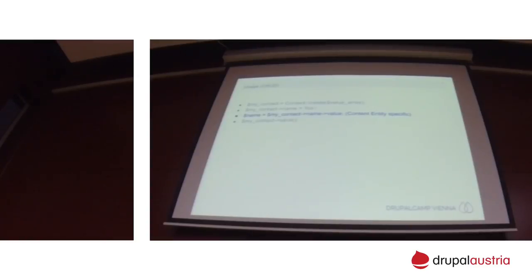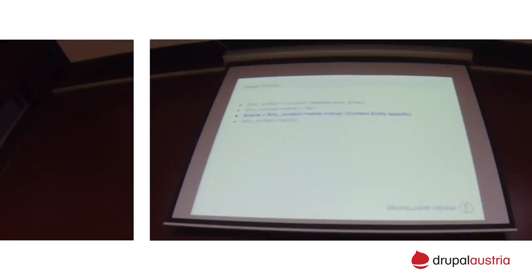With this, you would put the value of the name field in the contact entity into a variable called 'name'. You don't need to do the get. Content fields are based on a field structure, so you can in your custom entity type add methods. But by default, you can access any field and any property of it using that syntax. It's actually using PHP magic internally.